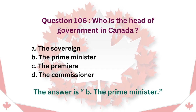Question 106: Who is the Head of Government in Canada? A. The Sovereign. B. The Prime Minister. C. The Premier. D. The Commissioner. The answer is B. The Prime Minister.